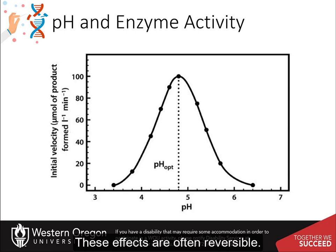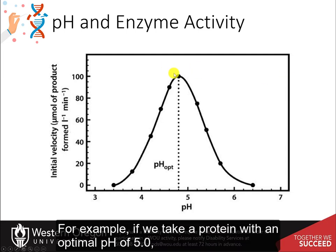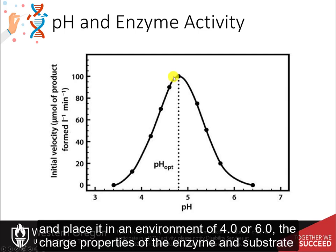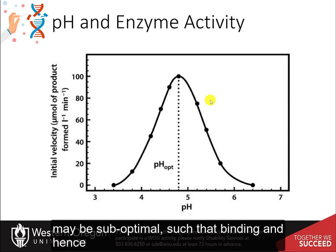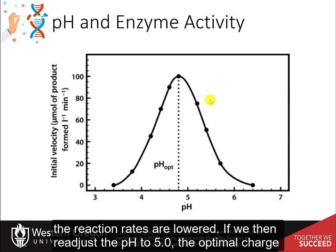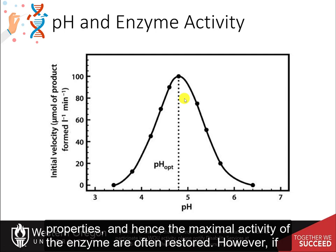These effects are often reversible. For example, if we take a protein with an optimal pH of 5 and place it in an environment of pH 4 or 6, the charge properties of the enzyme and substrate may be suboptimal, such that binding and hence the reaction rates are lowered. If we then readjust the pH to 5, the optimal charge properties and hence the maximal activity of the enzyme are often restored.